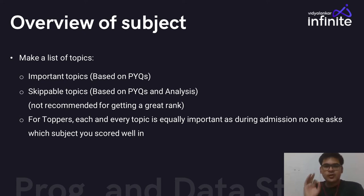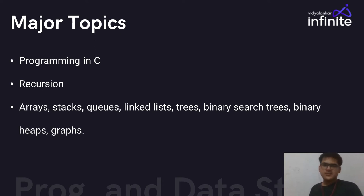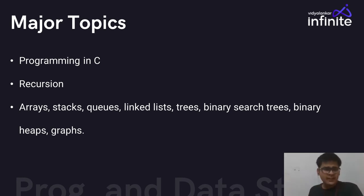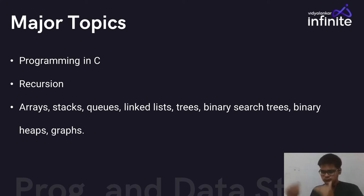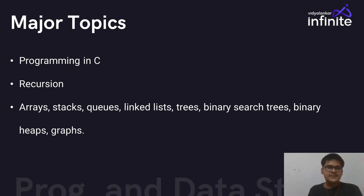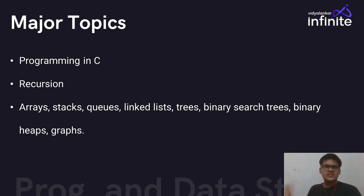The major topics in Programming and Data Structures are: Programming in C, Recursion (including head recursion, tail recursion, nested recursion, mutual recursion), Arrays, Stacks, Queues, Linked Lists, Trees, Binary Search Trees, Binary Heaps, and Graphs. These are the major topics one should be thorough with in Programming and Data Structures as a whole.